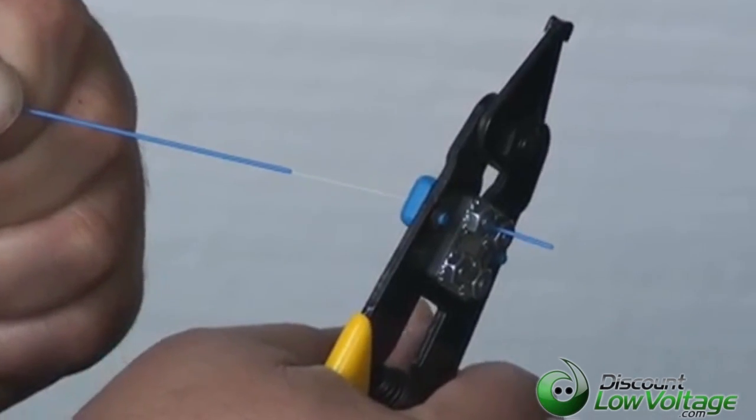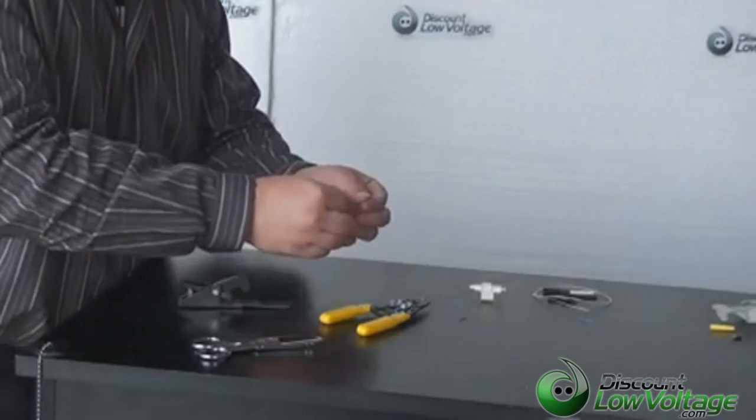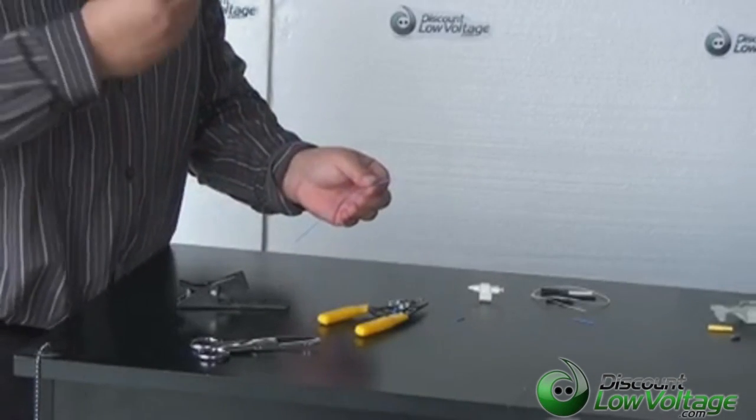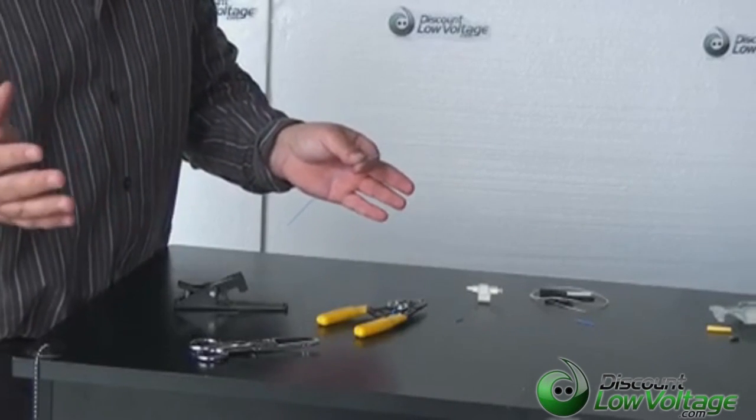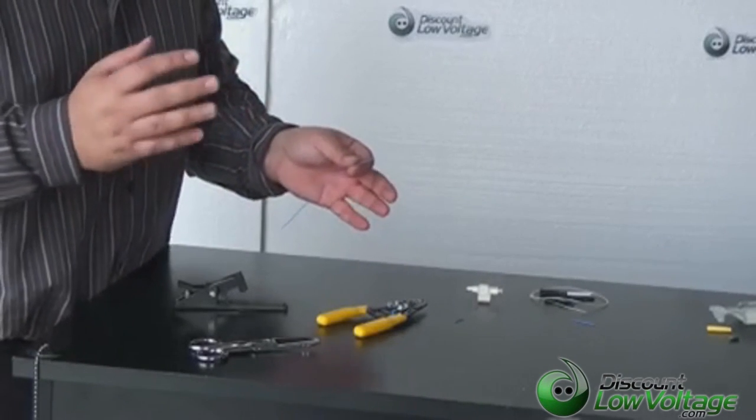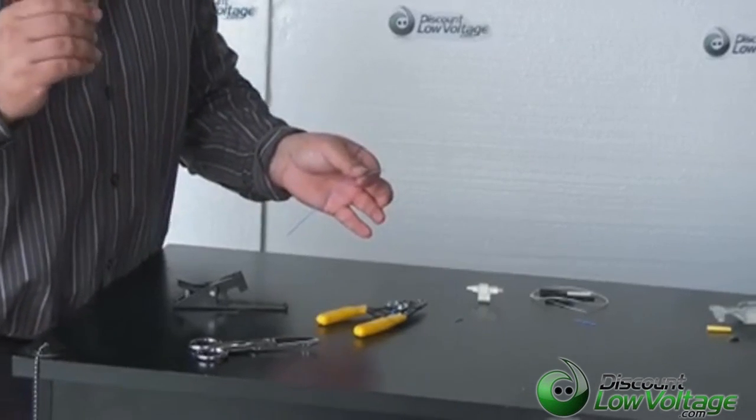Now this does take a little bit of time but I would buy a little extra just so you can get a better feel for terminating, going through the step by step. Maybe buy some extra if you want to start off doing this and play with it for a while. Now our next step is to cleave the fiber.